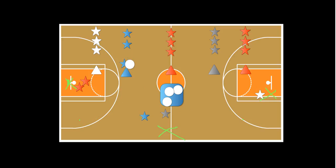If a student makes their shot, they go to the basket and are allowed to grab two letters. They return those two letters back to their team and hand off to the next person in line. So making a shot earns your team an extra letter — for example, they might come back with C and D.